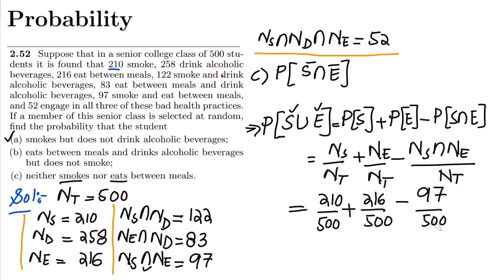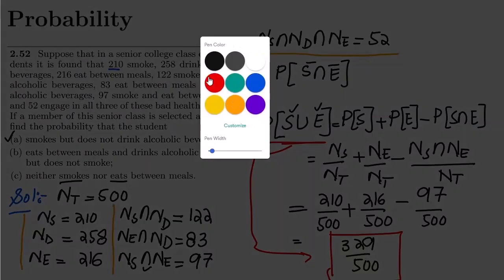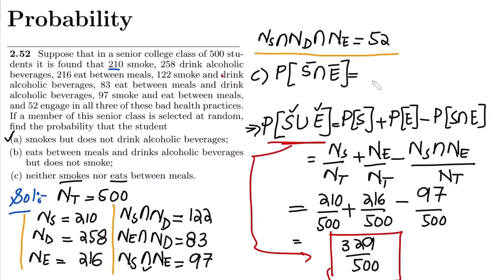Once I calculate it and find the common denominator, I get 329 divided by 500. So P(S union E) = 329/500. Now in order to find the probability of a student who neither smokes nor eats between meals, I need to use the complement.